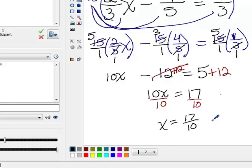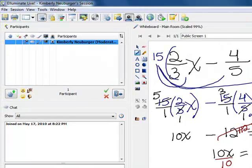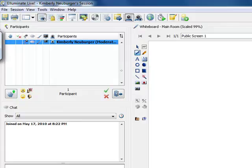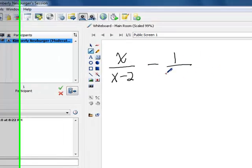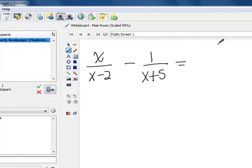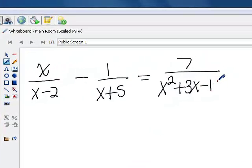So now, since this process is exactly the same as what we're going to do for a rational equation, let's take a look at one of those. The rational equations might look something like this particular problem here. We might have something like x over x minus 2 minus 1 over x plus 5 equals 7 over x squared plus 3x minus 10. Now, this problem right away, you're going, wow, how do we find our least common denominator?